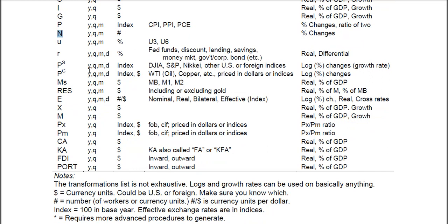Here are commodity prices, which can also be daily. Sometimes this is in dollars. You can have the oil price, like West Texas Intermediate. You can get copper prices and other metals. This can also be in dollars or you can have an index. Percentage changes in commodity prices are pretty common.